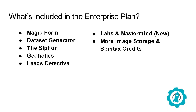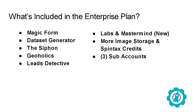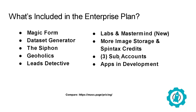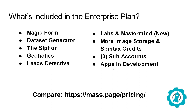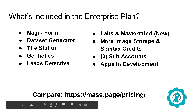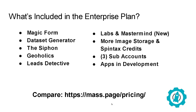When you're an enterprise plan member, you're going to get more image storage, more Spintex credits, and three sub-accounts — accounts that have separate logins — plus other apps in development. If you want to see all of the plans we have, which are business, agency, and enterprise, just go to mass.page/pricing.